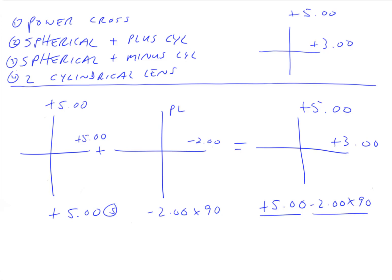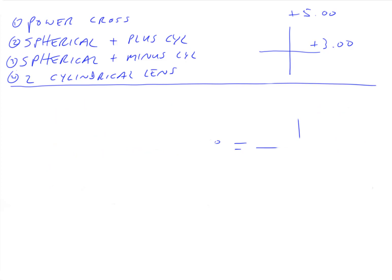Okay, so let's do another one. And let's do one where the axes are not 90 and 180 just like we did last time. So let's do one where the axis is like 110. Let's say this is 110. And 110 minus 90 would be 20.